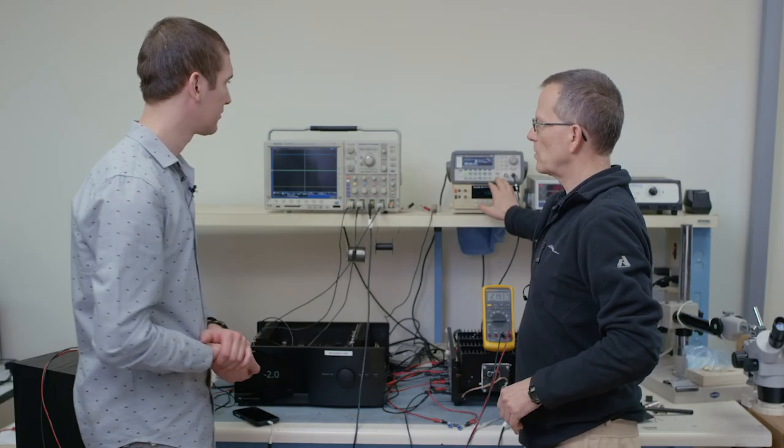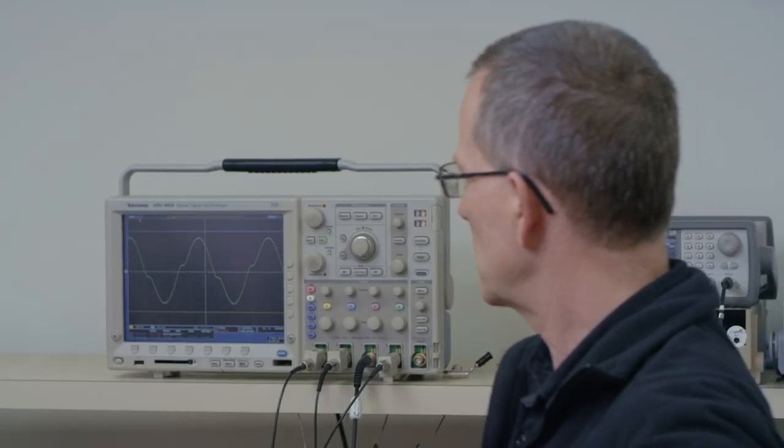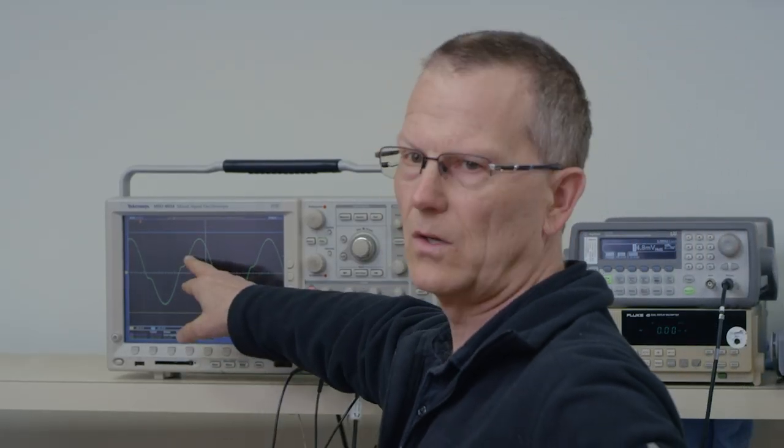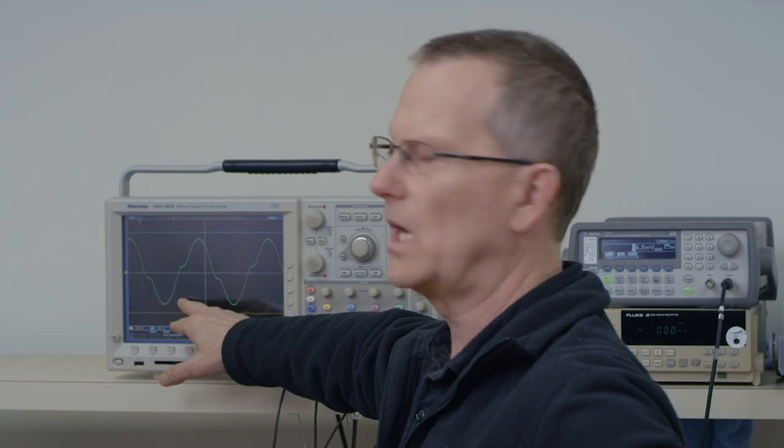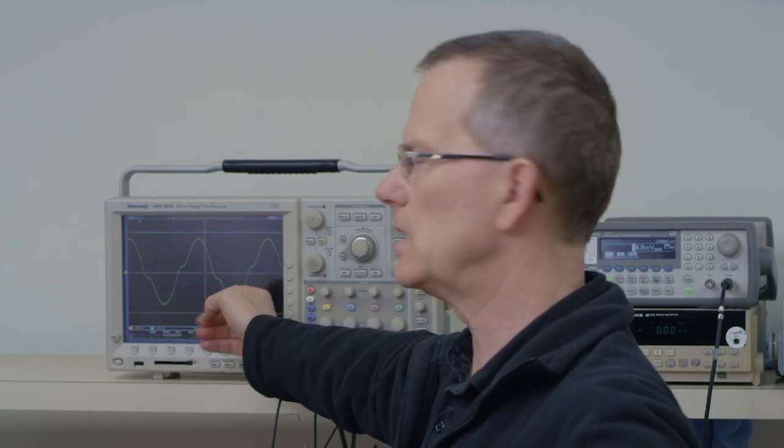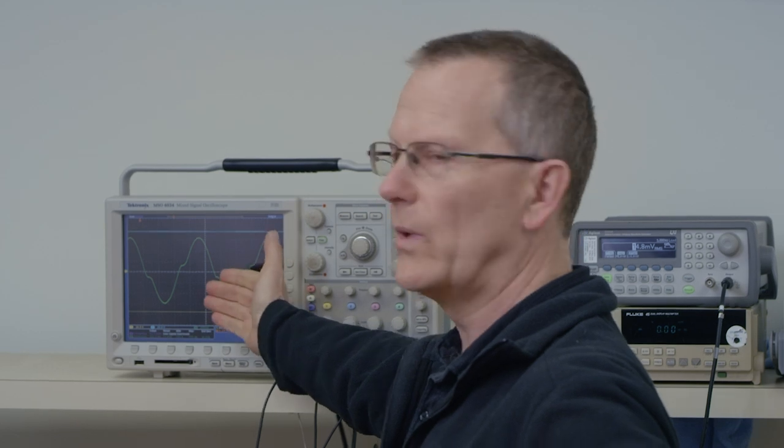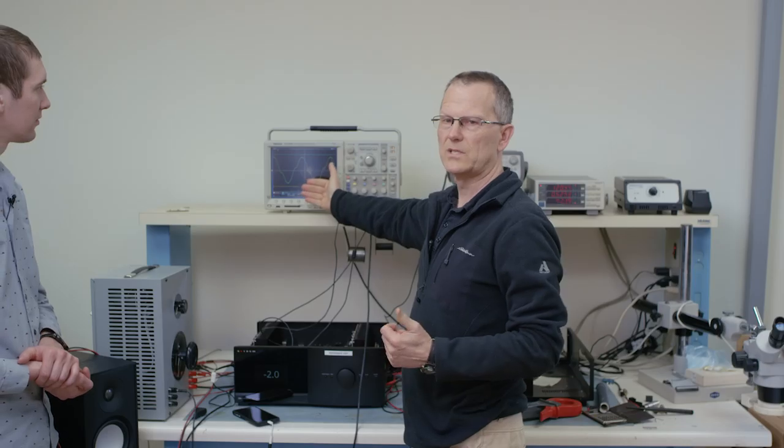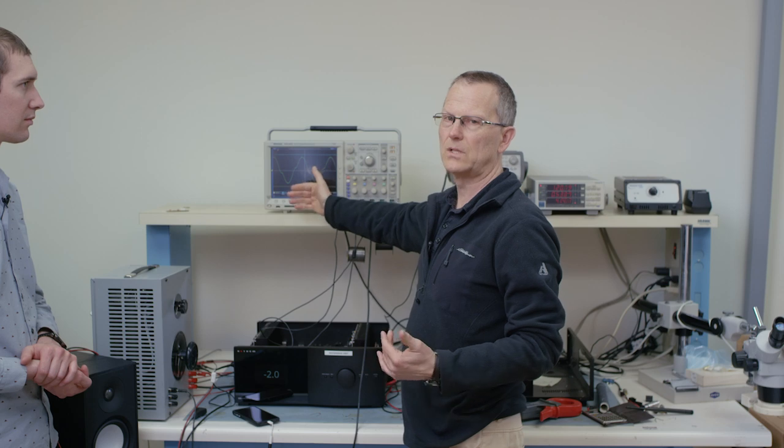The other type of distortion is crossover distortion and that's very bad. It happens when the signal transitions from the positive transistor to the negative transistor in a badly designed amplifier. And this is what it would look like. So at the zero crossing of the signal you have a severe non-linearity and it creates a lot of distortion. And the bad thing about it is it's always there because whether the signal is soft or loud the distortion is always there.